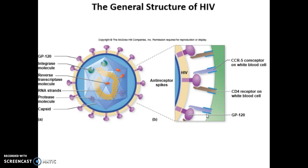The host T cell has to have the CD4 molecule on it, so HIV is going to infect cells that are CD4 positive. They also need a co-receptor CCR5. Both of these receptors have to be on the host cell in order for the virion to attach to the host cell and get into the cell.